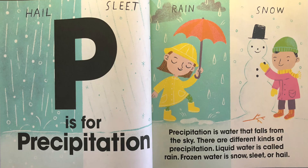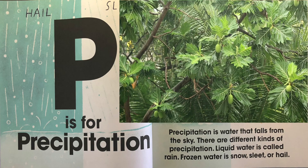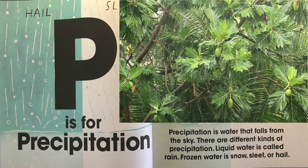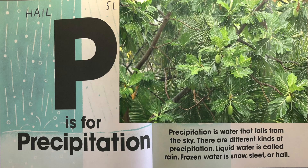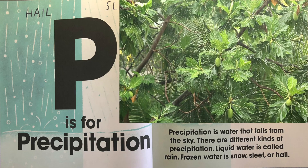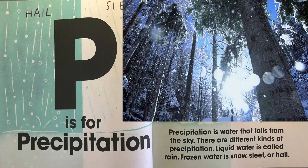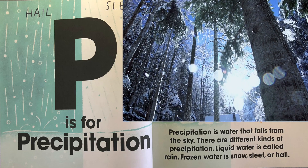P is for precipitation. Precipitation is water that falls from the sky. There are different kinds of precipitation. Liquid water is called rain. Frozen water is snow, sleet or hail.